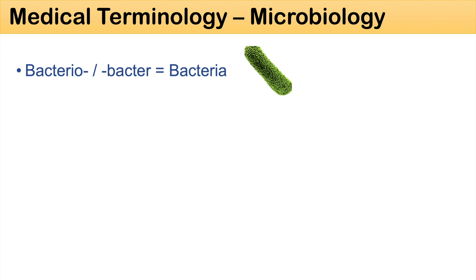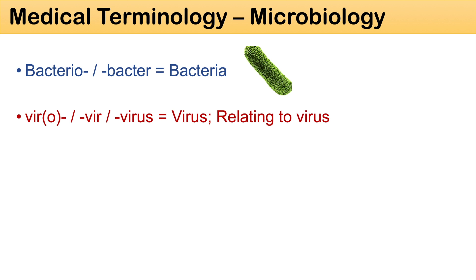To begin, the prefix bacterio and the suffix bacter mean bacteria. So words like bacteriophage and enterobacter mean bacteria or something relating to a bacteria. With regards to the prefix vir or viro and the suffixes vir or virus, these mean virus or something relating to a virus. You can think of words like ritonavir, which is an antiviral drug, and antivirus.